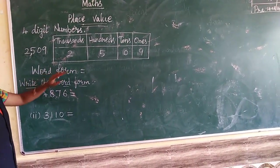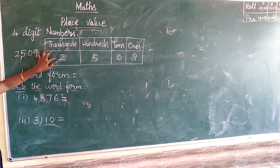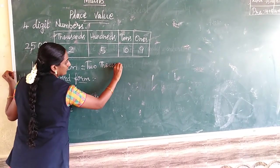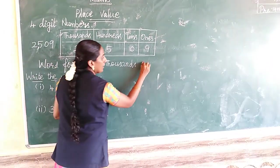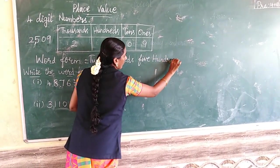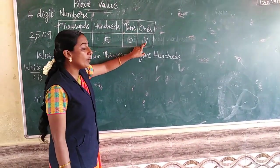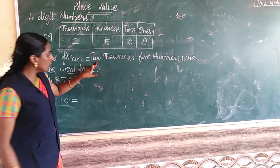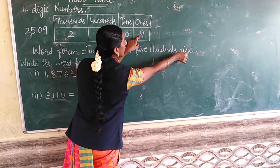Next we are going to write both forms, starting from the highest place value. The 1000s place: how many 1000s? 2000. The 100s place: how many 100s? 500. The 10s place is 0, so no need. The 1s place: how many 1s? 9. So we have 2000 + 500 + 9.